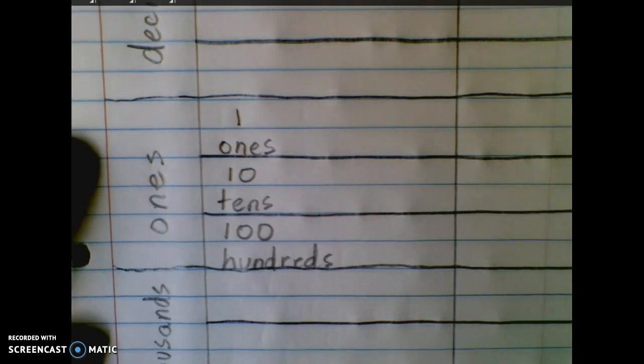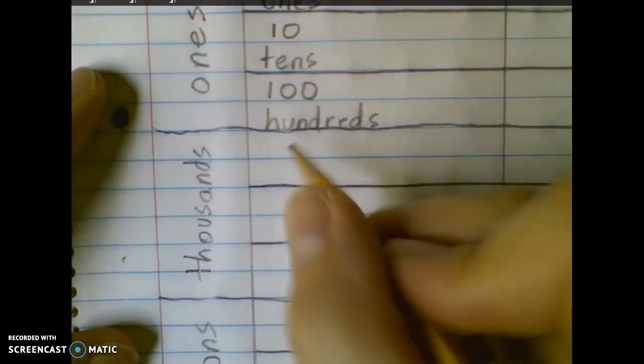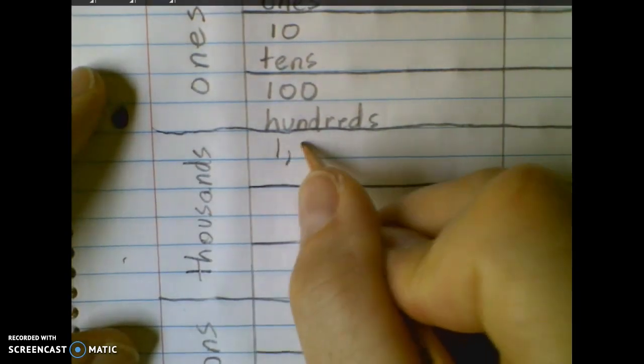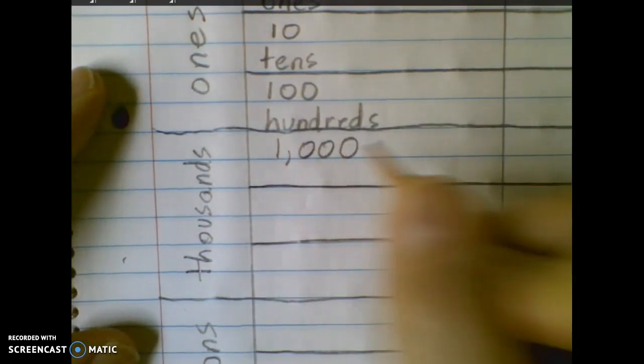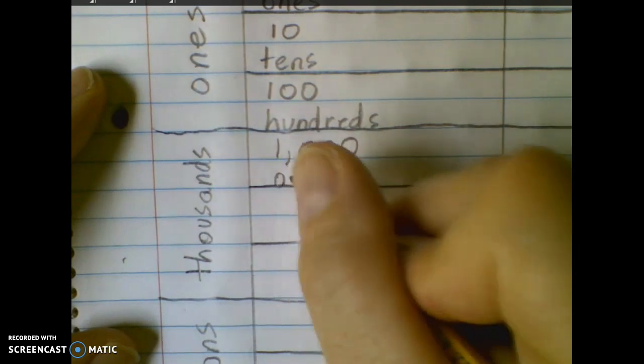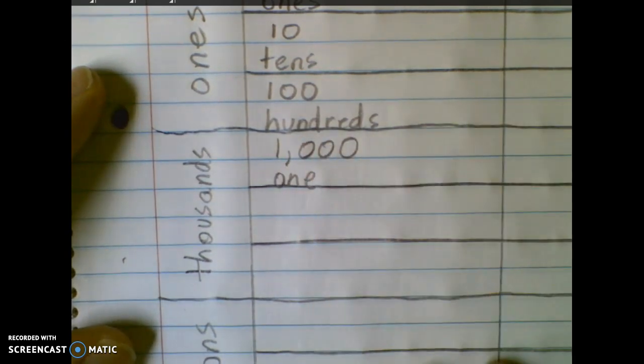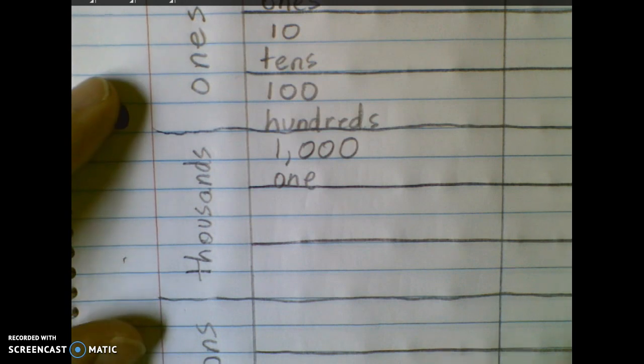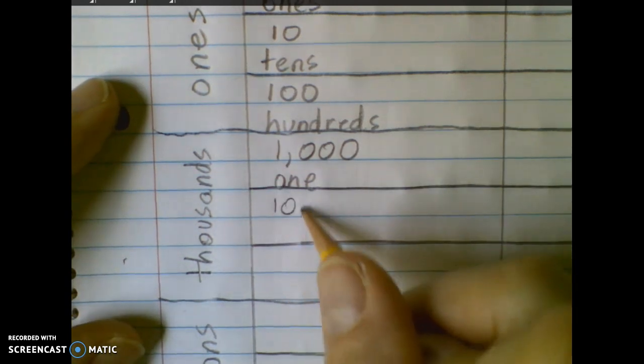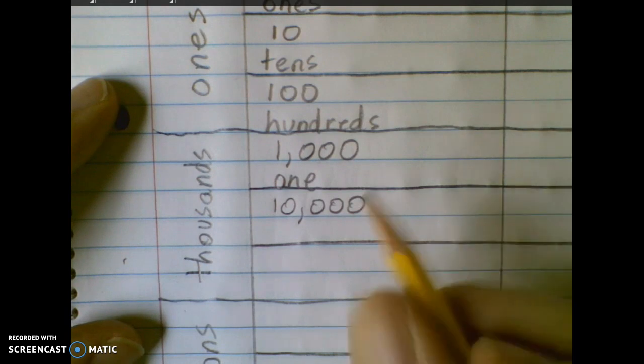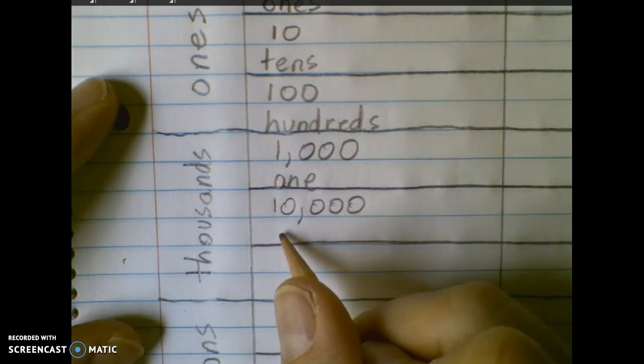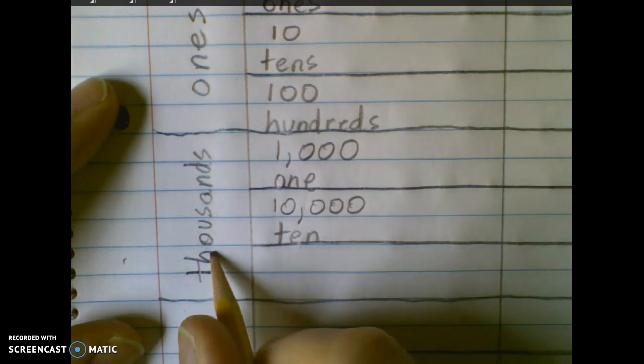Now that same pattern continues through the larger periods. We have a thousands period or 1,000. We have a ten thousands place, ten in the thousands period.